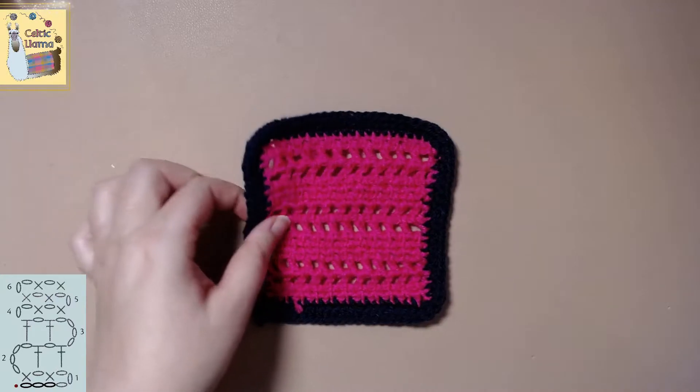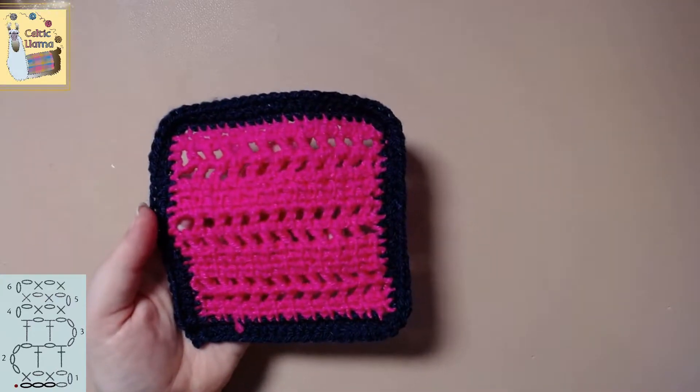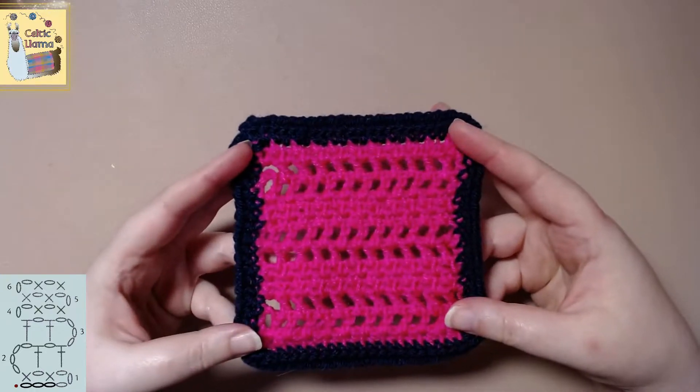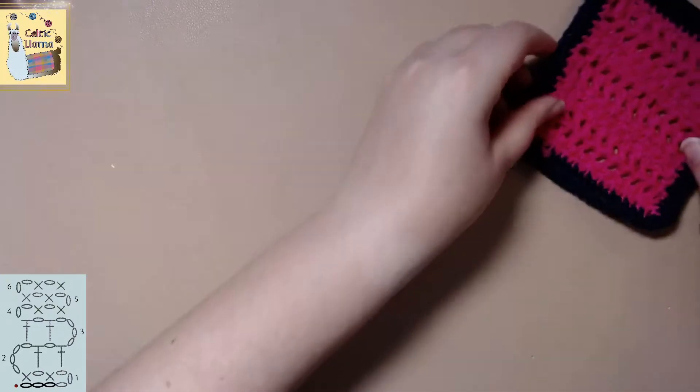Welcome to the Celtic Llama. In today's tutorial I'll be showing you how to do the open work crochet stitch pattern. It is a reversible pattern meaning that it'll look the same on both sides.